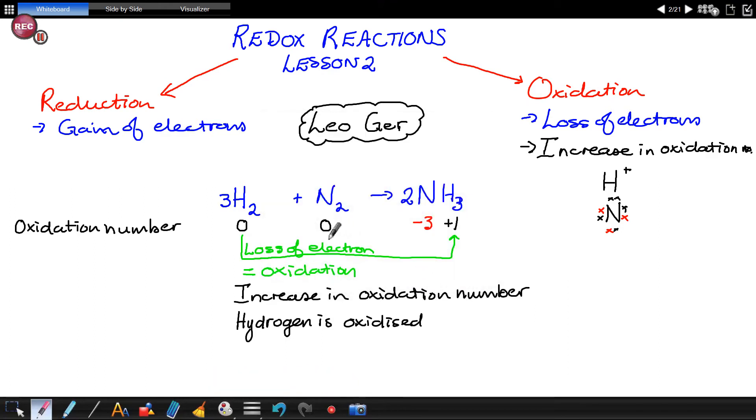Nitrogen's oxidation number went from zero to minus three. And mathematically, that implies that nitrogen gained negatives, and the negatives are electrons. So, this involves a gain of electrons.